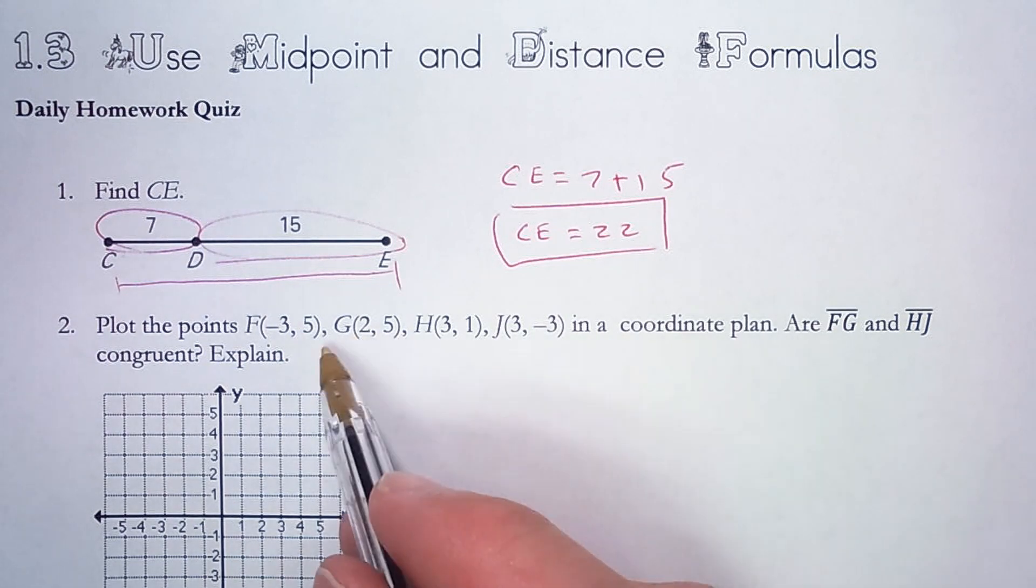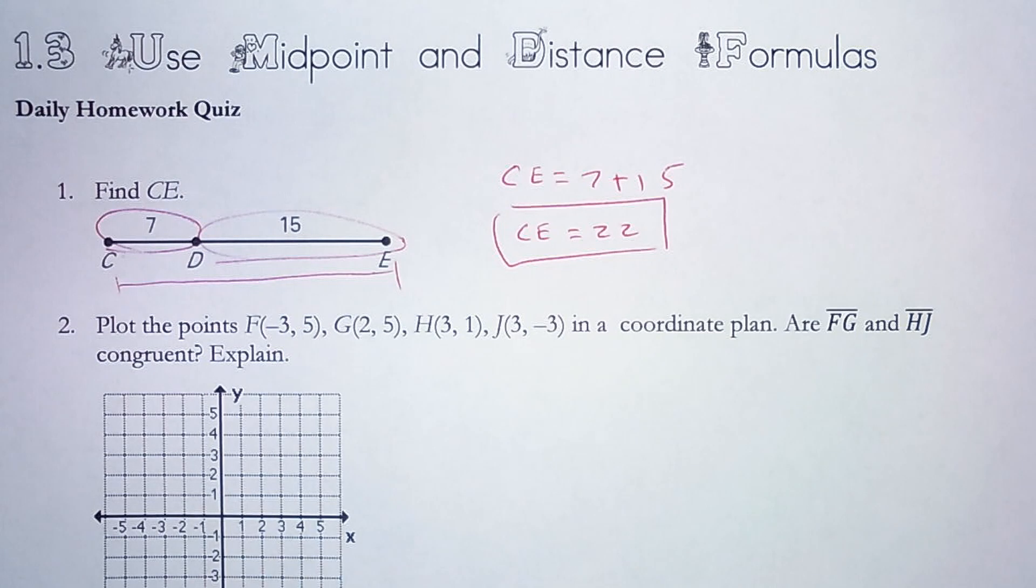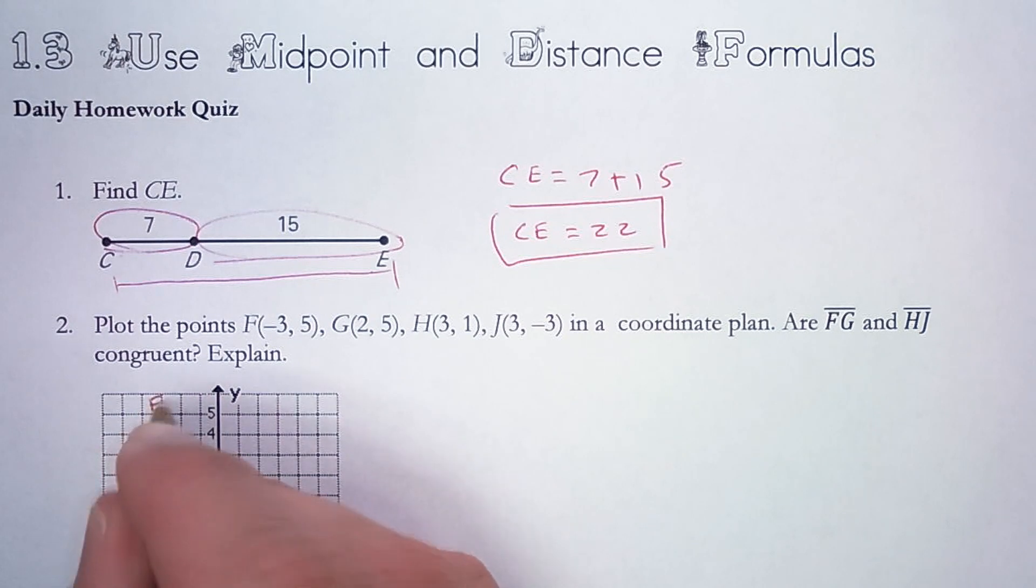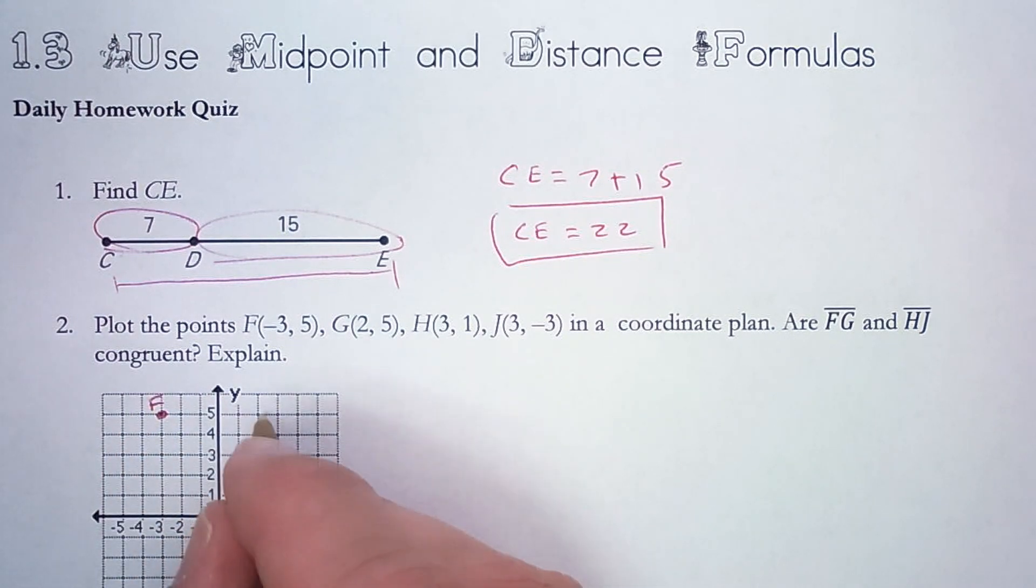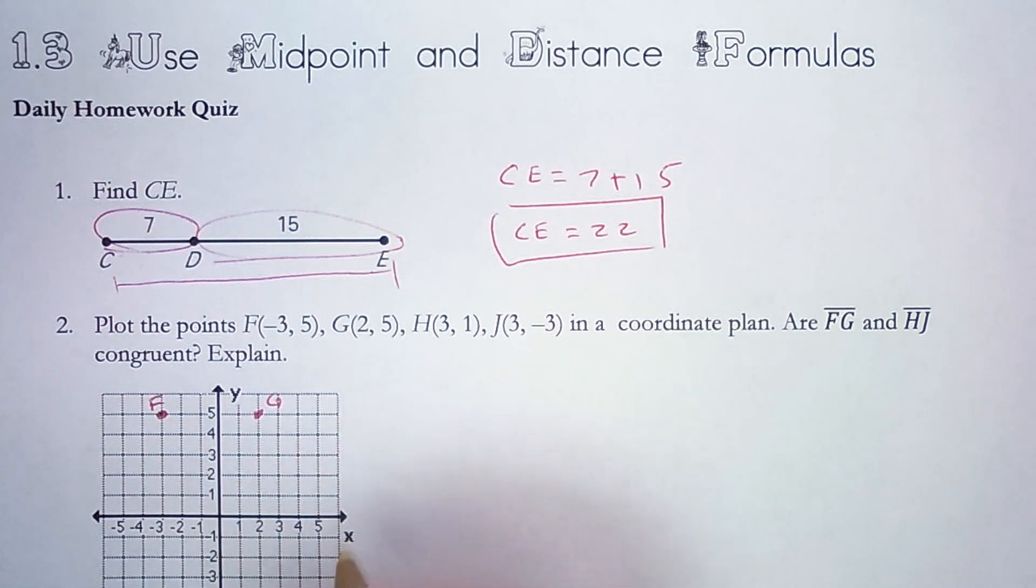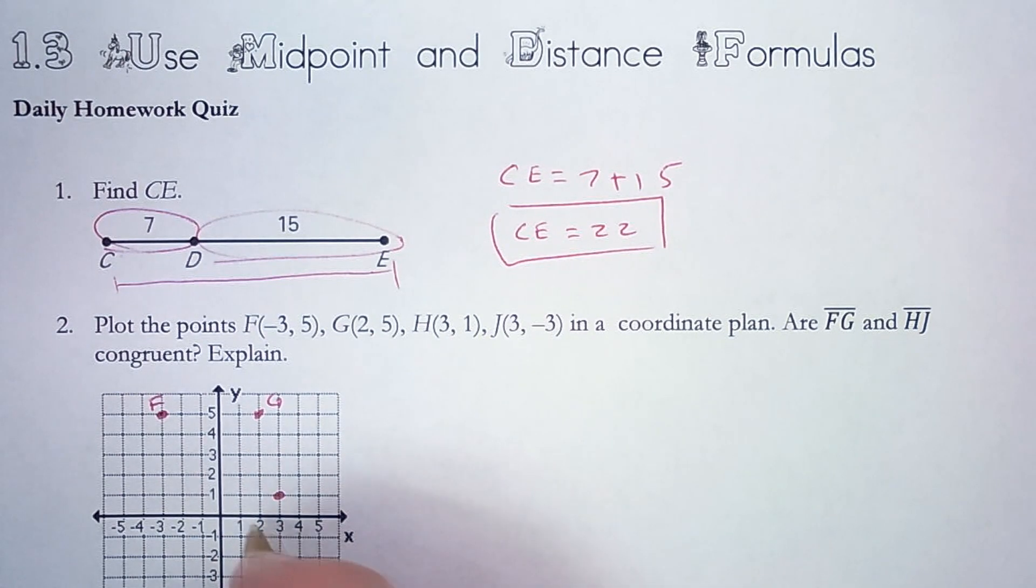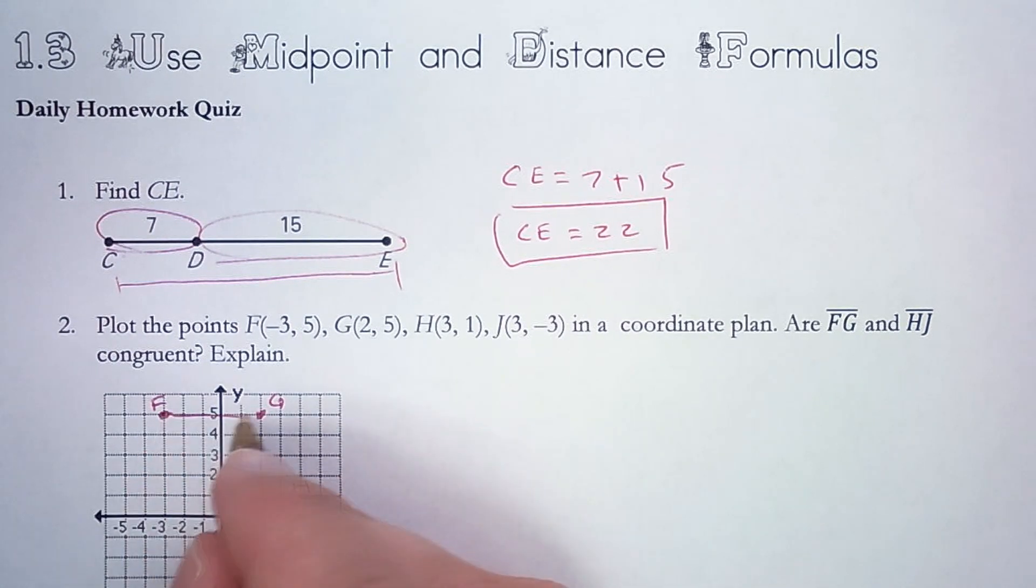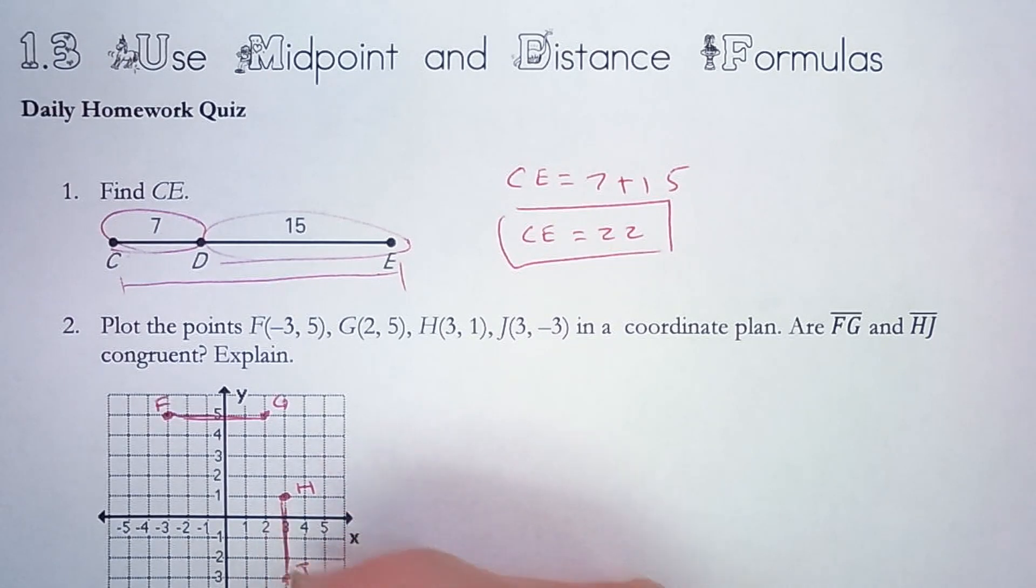Number two, plot these points F, G, H, and J. So we're going to plot all four of those points. F is negative three, five. G is two, five. H is three, one. And J is three, negative three.